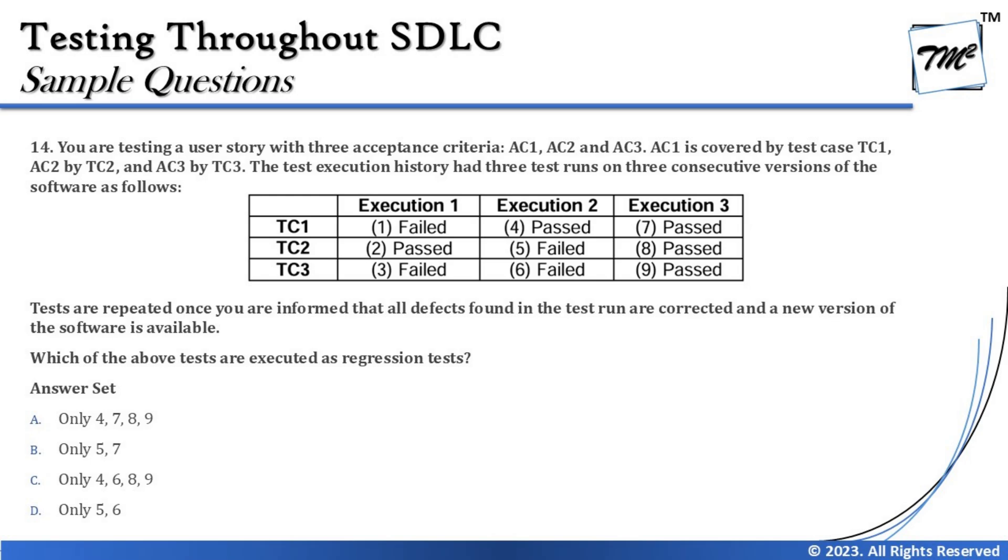Here is a simple definition to solve this: confirmation testing (retesting) is repeating a previously failed test again — it initially failed, a defect was reported, and you rerun it to confirm the fix. Regression testing, on the other hand, is when you repeat a previously passed test again. This is one of the simplest definitions for confirmation and regression testing. With this context, let's look at the table.